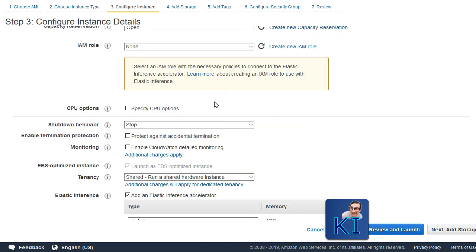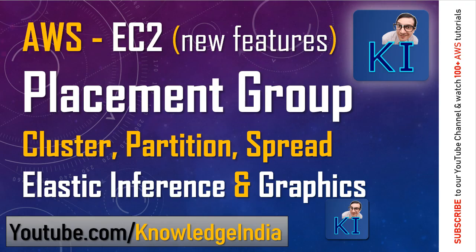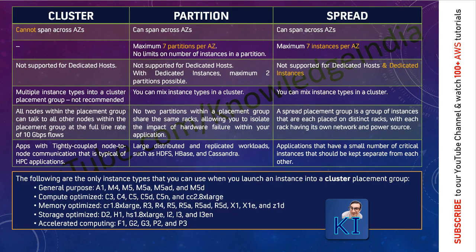Coming back to our placement groups — there are 3 types of placement groups and it's very important to understand the differences between them. I have summarized it in a very easy manner so that you can compare and understand all of them. Till sometime back, there used to be only one type of placement group, meaning there was no type specified. Now that there are multiple types available, let's understand the 3 types and the differences: cluster, partition, and spread.